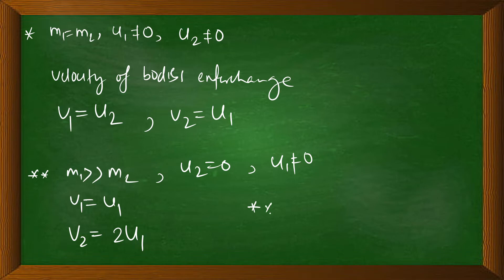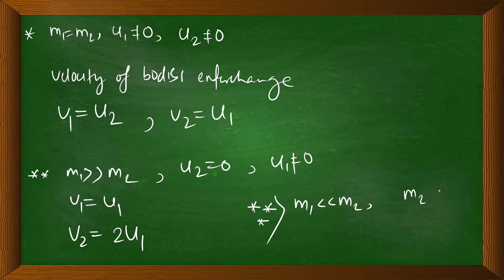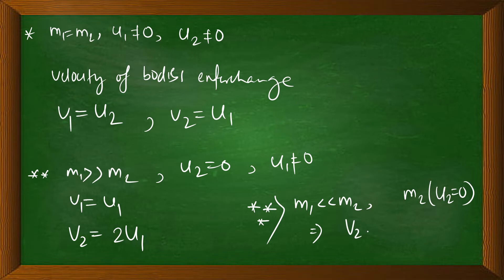The third case: M1 is less than M2. In this case, the lighter object bounces back. The velocity of M2 does not change significantly, and M1 reverses direction — its final velocity is negative.